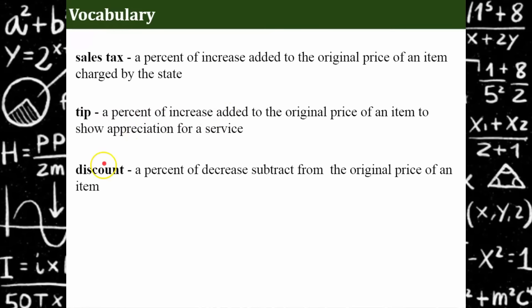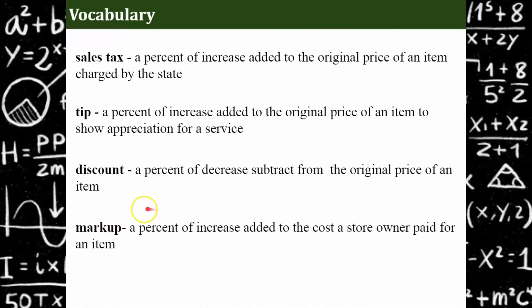Then we have discount. We love discounts. When you go to the store and something's on sale, that's a discount. It's a percent of decrease and we subtract it from the original price of the item. And then we have markup. Markup is a real world example of percent of increase and we add this to the cost a store owner has paid for an item.